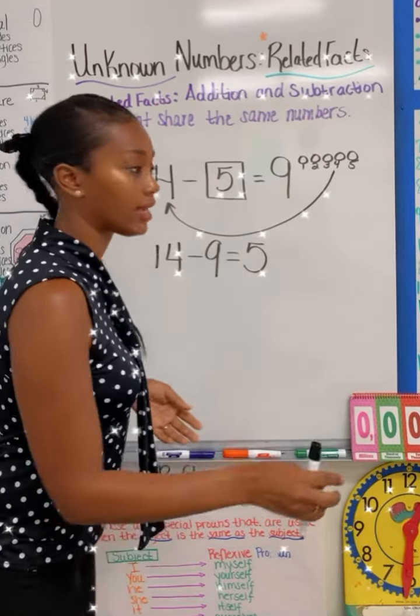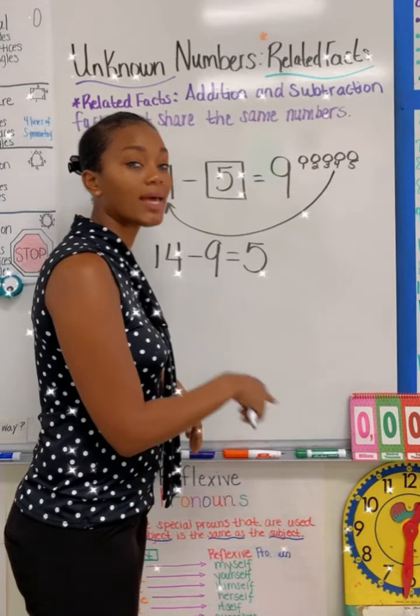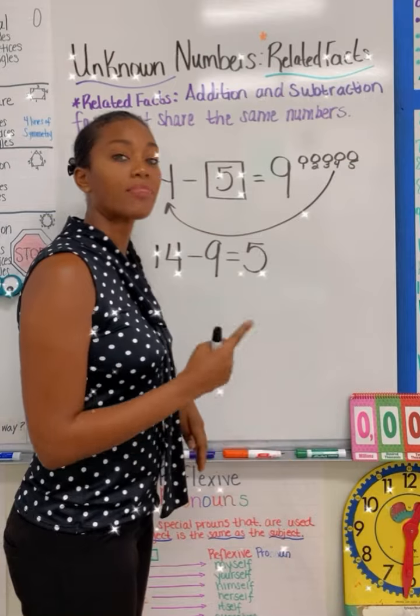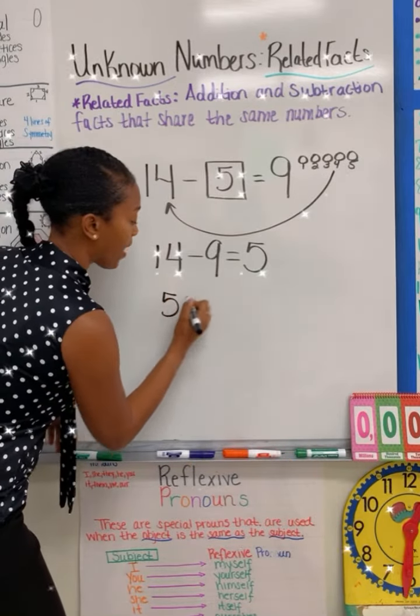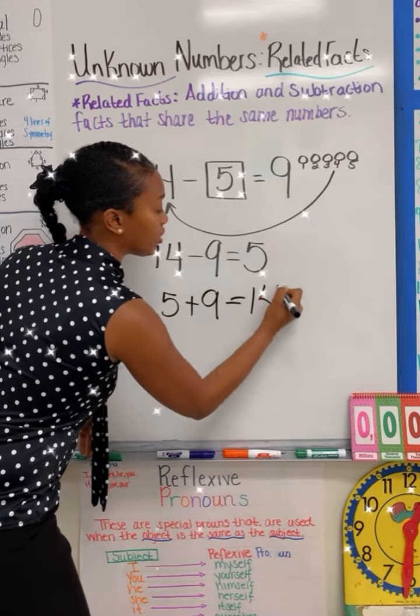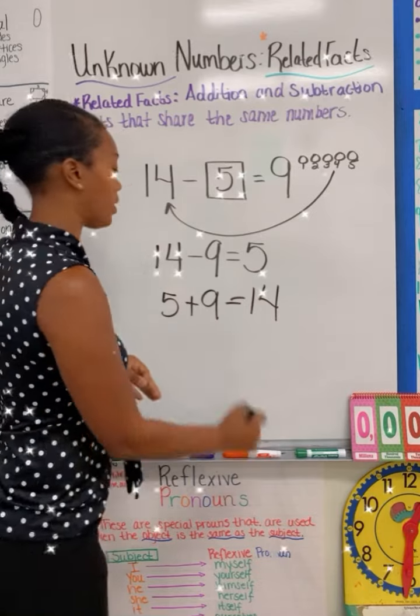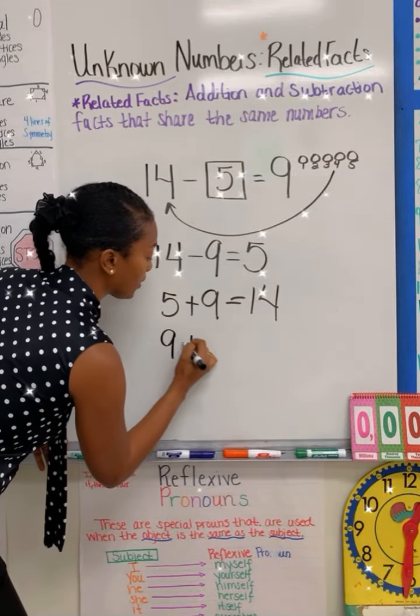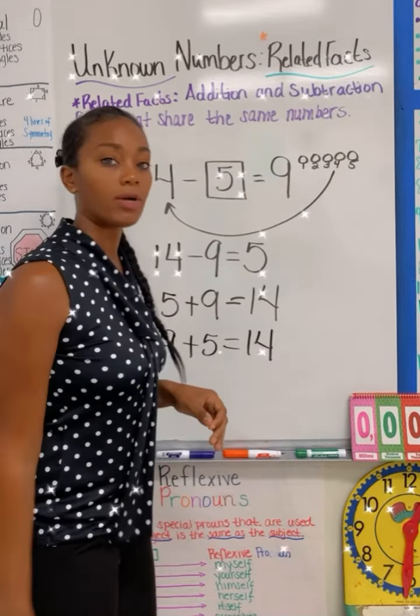Now I'm going to take this subtraction number sentence or equation and turn it into a related fact, but this time using addition. So it's going to be five plus nine is equal to 14, and I can also write another one, which is nine plus five is equal to 14.